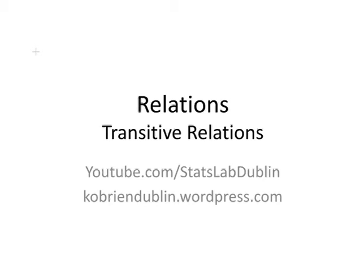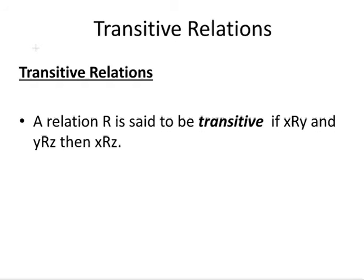In this presentation, we look at transitive relations. A relation R is said to be transitive if we have two conditions. If we have xRy and yRz,